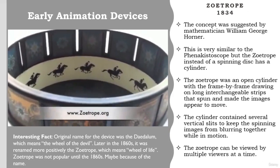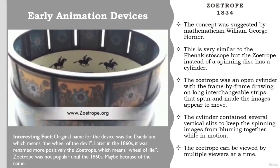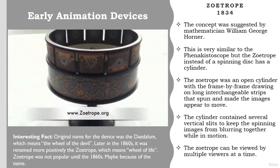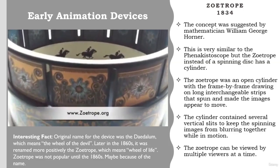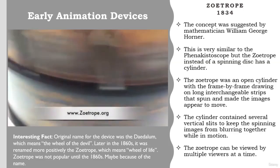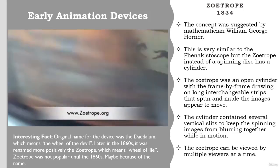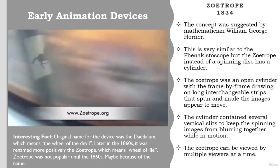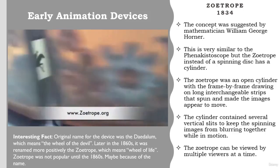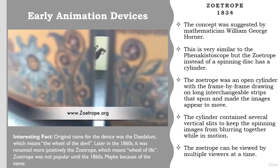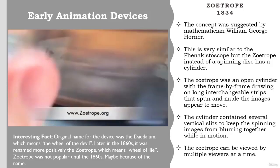The concept of the zoetrope was suggested by mathematician William George Horner. This is very similar to the Phenakistoscope, but the zoetrope, instead of a spinning disk, has a cylinder. It was an open cylinder housing frame-by-frame drawings on long interchangeable strips that spun and made the images appear to move. The cylinder contained several vertical slits, which prevented the spinning images from blurring together. The zoetrope can be viewed by multiple viewers at a time. The original name for the device was 'daedalum,' meaning the wheel of the devil. Later in the 1860s, it was renamed more positively the zoetrope, meaning 'wheel of life.' Zoetrope was not popular until the 1860s, perhaps because of the name.